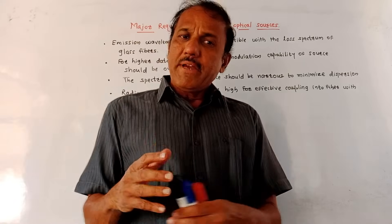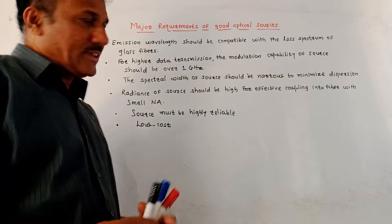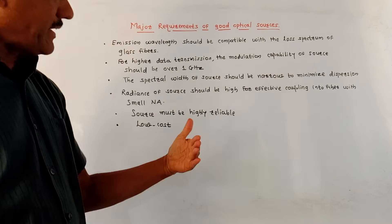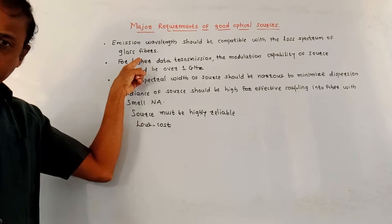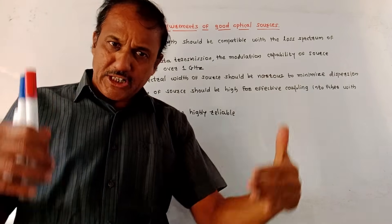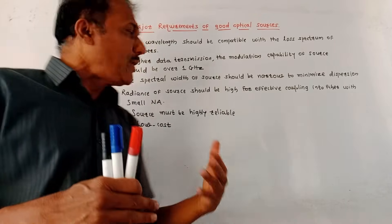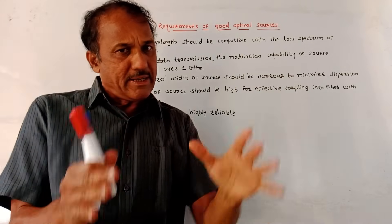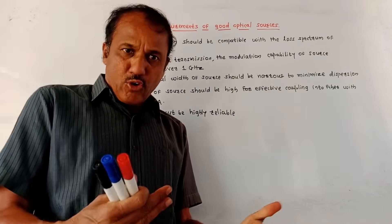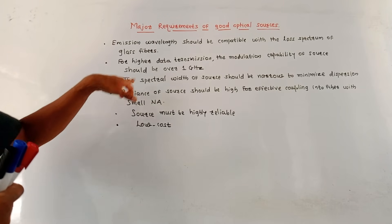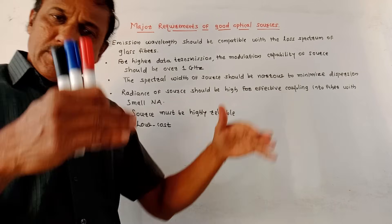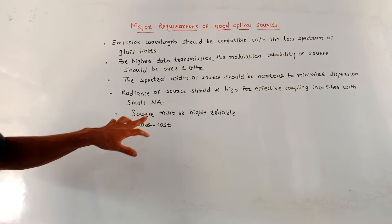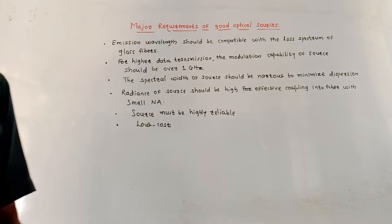Next part is: what are the major requirements of good optical sources? First, the emission wavelength of the optical source should be compatible with the loss spectrum of glass optical fibers. For higher data transmission, the modulation capability of the light source should be over 1 GHz. The spectral width should be as narrow as possible to minimize dispersion. The radiance should be as high as possible for effective coupling to low numerical aperture fiber optic cable. The source should be highly reliable and its cost should be low.